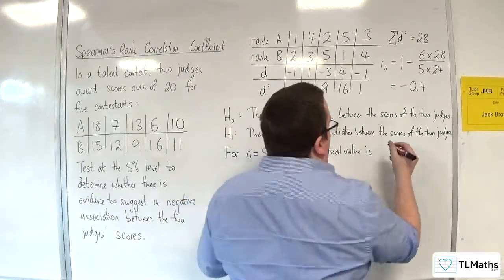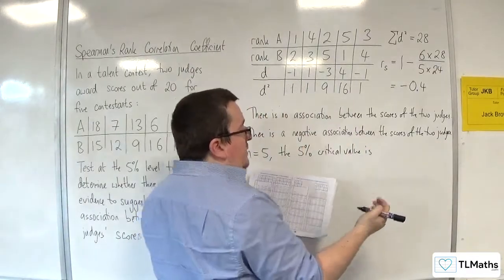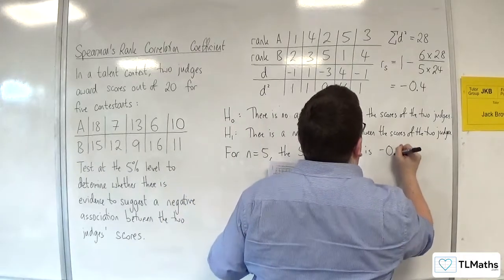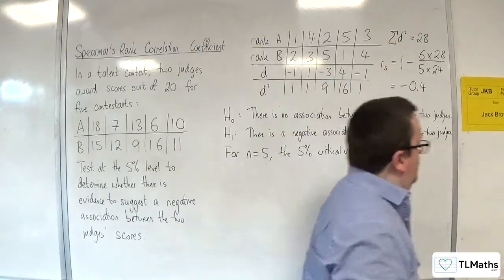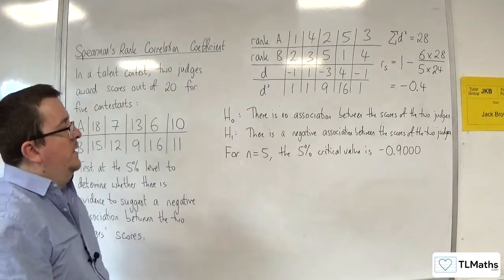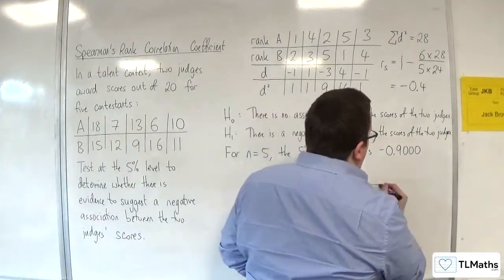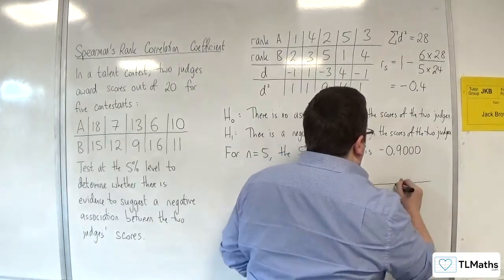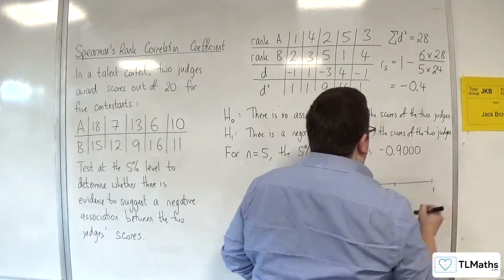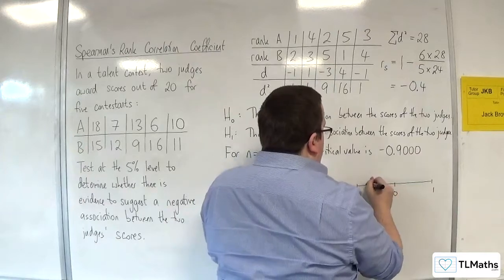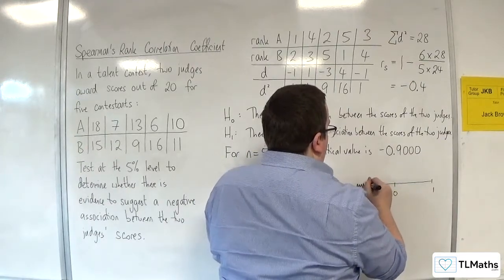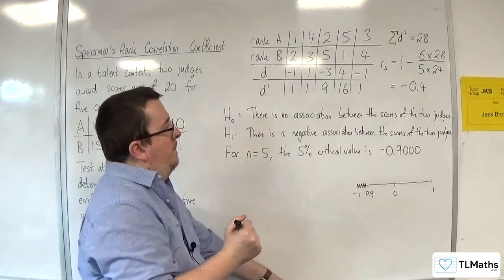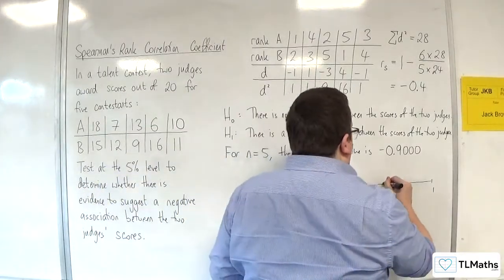And the critical value is 0.900. Okay, so, because we are doing a negative association, this should be minus 0.900. Okay, so if you want to draw a number line, just so you can visualize this, you can. So, minus 0.900 is up here. So, that is my critical region. And the minus 0.4 is somewhere down here.